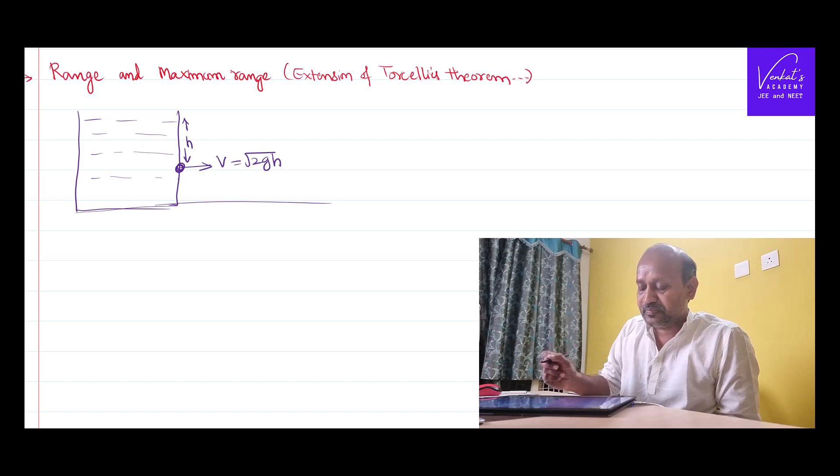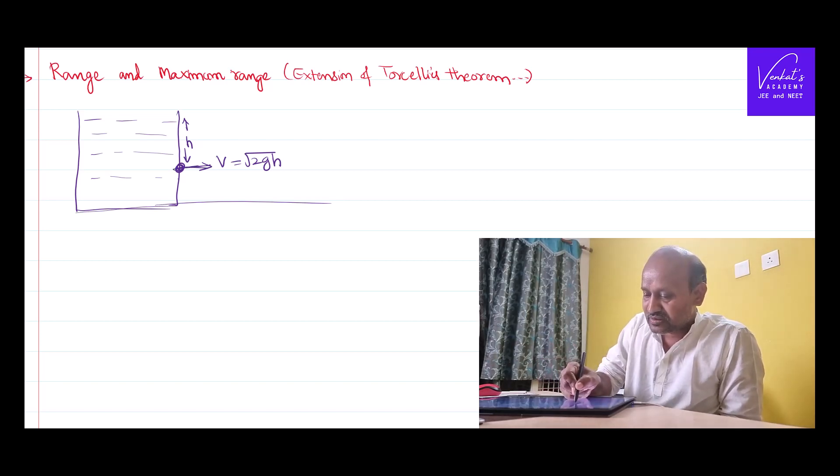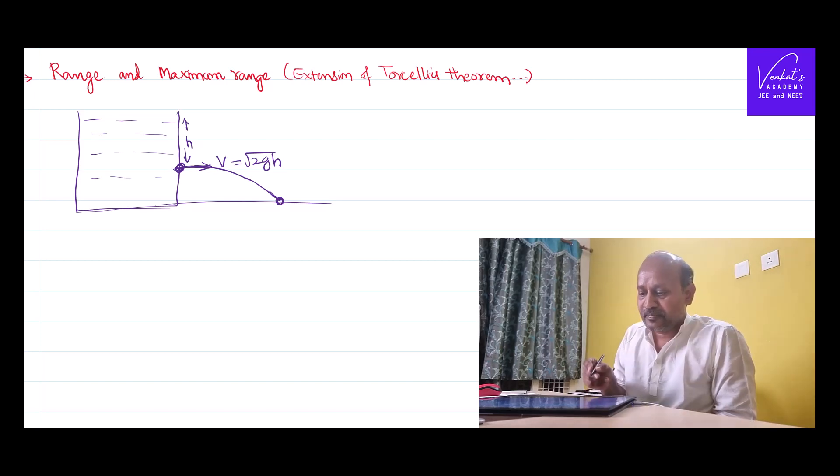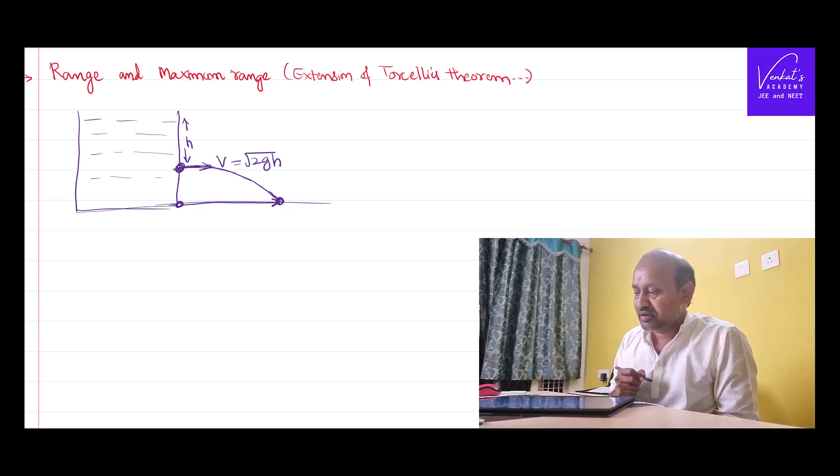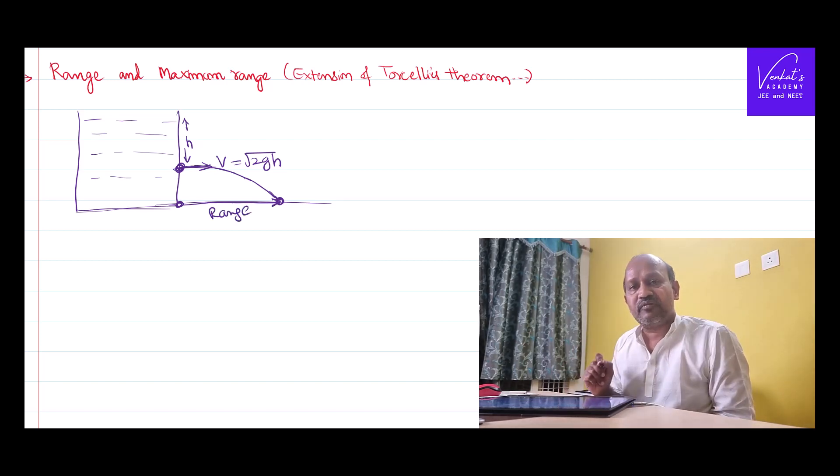Let's continue now. From this, the fluid comes out and because of gravity, it takes a parabolic path and strikes the floor somewhere. The distance from the base where the fluid strikes the ground is called the range of the fluid. We would like to calculate what that range is.